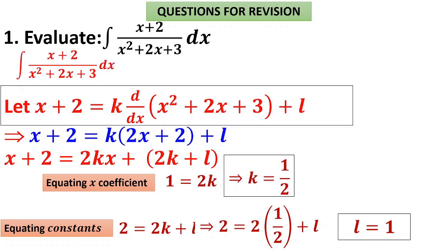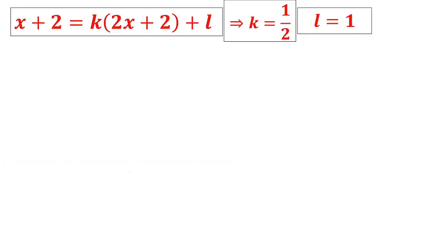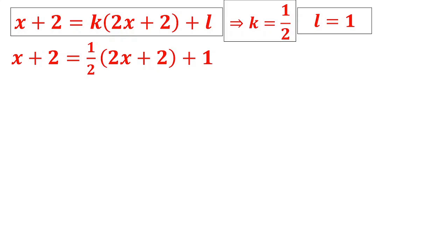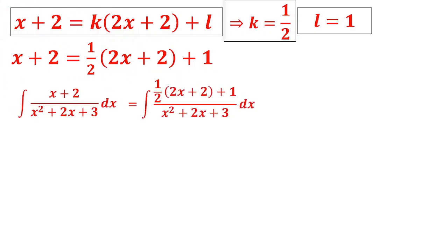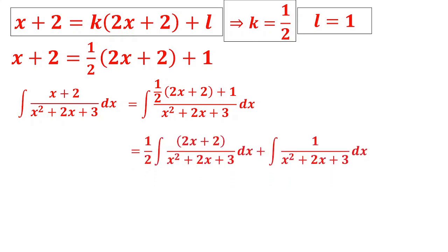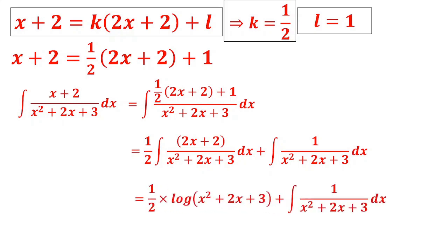Evaluating k and l is very important as it decides the answer. We write x+2 = (1/2)·(2x+2) + 1. Check: (1/2)·2x = x ✓, (1/2)·2 + 1 = 2 ✓. Now we put the numerator as (1/2)(2x+2)+1 and split the integral: ∫(1/2)(2x+2)/(x²+2x+3)dx + ∫1/(x²+2x+3)dx.